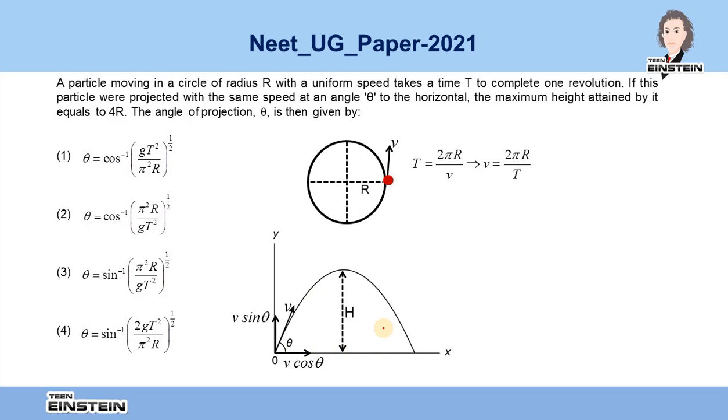If you want to find the maximum height attained by the particle, you can use the kinematic equation: v² equals u² minus 2gH, where u is v sin theta and the final velocity v at maximum height is zero.